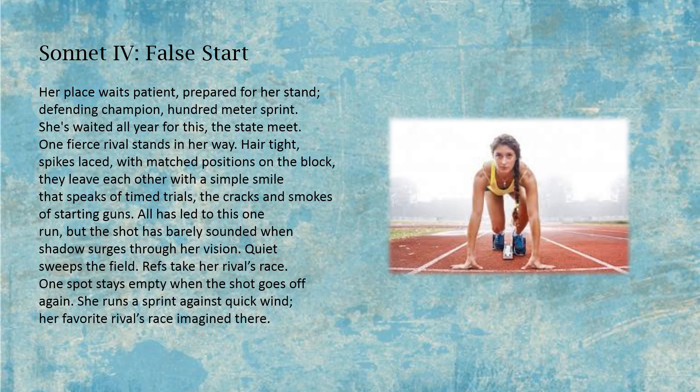Sonnet four: False Start. Her place waits patient, prepared for her stand. Defending champion, hundred meter sprint. She's waited all year for this: the state meet. One fierce rival stands in her way. Hair tight, spice-laced, with matched positions on the block. They leave each other with a simple smile that speaks of time trials, the cracks and smoke of starting guns. All has led to this one run, but the shot has barely sounded when shadow surges through her vision. Quiet sweeps the field. Refs take her rival's race. One spot stays empty when the shot goes off again. She runs a sprint against quick wind. Her favorite rival's race imagined there.